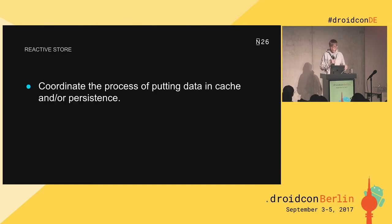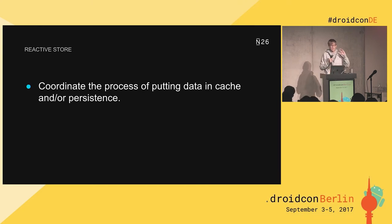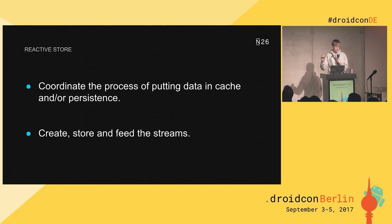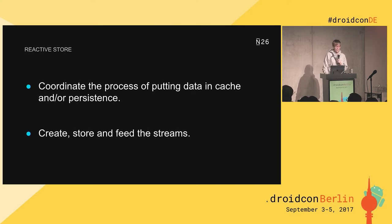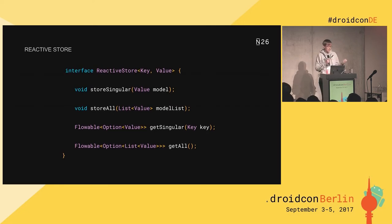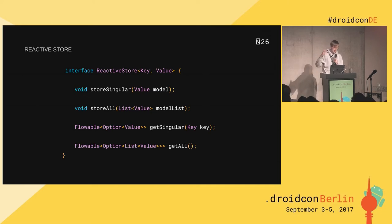The reactive store coordinates the process of putting data in a cache and/or persistence. The exact solution depends a lot on the requirements of the app — sometimes a database with a memory cache on top, sometimes shared preferences, or the file system. The reactive store also creates, stores, and feeds the streams, so those streams have to live somewhere. It's the heart of the whole architecture and can be divided into sub-components, each with a single responsibility. For this talk, we'll assume we've already created this reactive store with its store singular, store all, get singular, and get all interface.